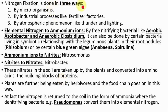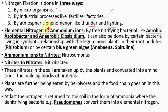How does nitrogen fixation take place? It happens in three ways — by microorganisms, by industrial processes like fertilizer factories, and by atmospheric phenomena like thunder and lightning, which fix nitrogen to a small extent. Regarding fixation by microorganisms, which is very important from your prelims point of view: elemental nitrogen is first converted to ammonium ions. The organisms that do this include free-living nitrifying bacteria — for example, aerobic Azotobacter and aerobic Clostridium. Please remember their names — they are important for prelims.